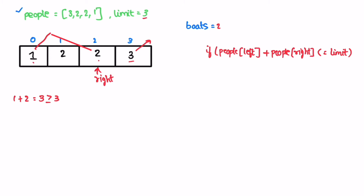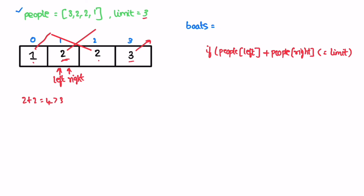We check again: element at left plus element at right is two plus two equals four, which is greater than three, so we don't send both people — only the right person. We send them in a separate boat, increment boats to three, and decrement right. Once both pointers cross each other, we end the iteration and return the output 'boats', which is the expected output.